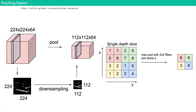You take every group of, say, four pixels, and max pooling means you just take the biggest one. So a group of one, one, five, six becomes six. There's also average pooling, used for some applications, but experimentally max pooling seems preferred for classification. Basically it's downsampling and there are no parameters — no weights to figure out. It's a simple operation.